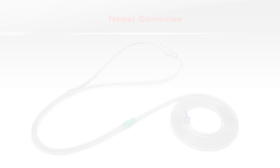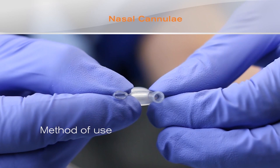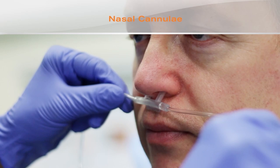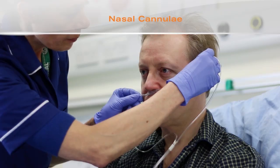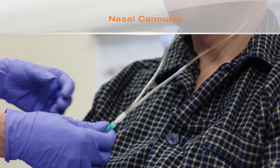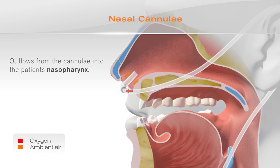Nasal cannulae are one of the most common ways of delivering oxygen therapy. A nasal cannula consists of two soft prongs attached to the oxygen supply tubing. Attach the oxygen tubing to the oxygen flow meter and set the flow rate to the appropriate flow for the patient. The prongs are inserted into the patient's nares, the tubing is looped over the patient's ears, and the toggle is adjusted to ensure a good fit. Oxygen flows from the cannula into the patient's nasopharynx, which acts as an anatomic reservoir.